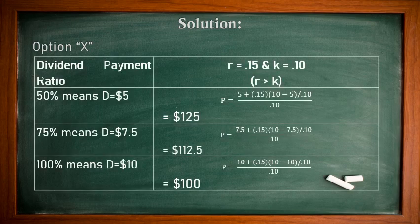Solution — Option X: R is 15% and K is 10%, so R is greater than K. At 50% dividend payout, we pay $5 out of $10 earnings. Driving Walter's formula gives a market price of $125. At 75% dividend, we pay $7.50, and the share price is $112.50. At 100% dividend payout — paying the full $10 — the share price is $100.